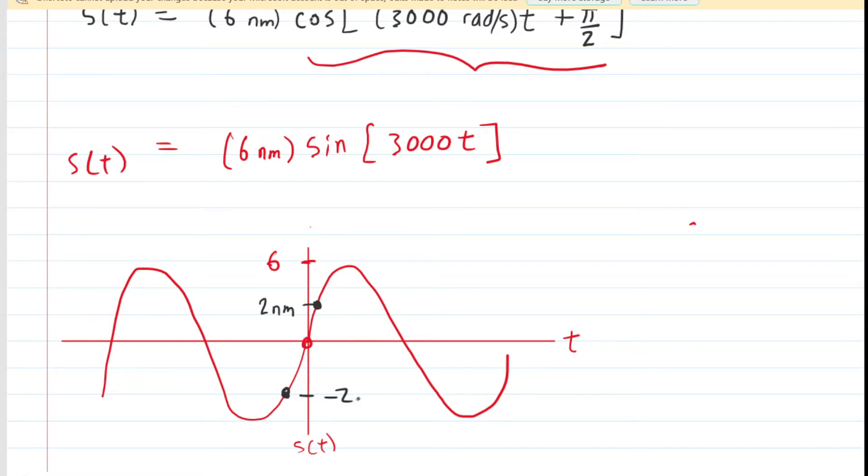So we're trying to find the time interval between those two positions, and basically our strategy is going to be the following. We're going to find how long it takes to get to the positive 2 nanometers, starting from t equals 0, of course.